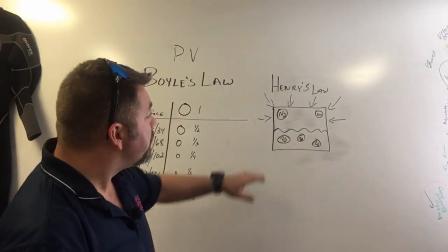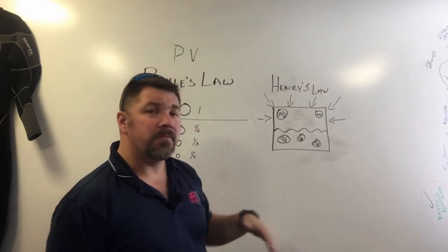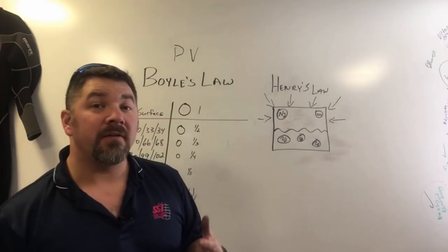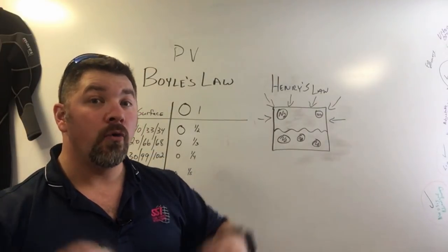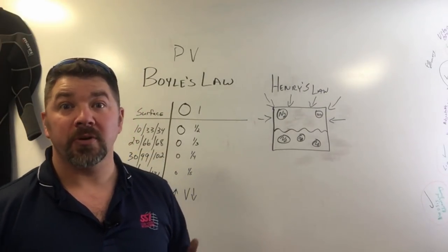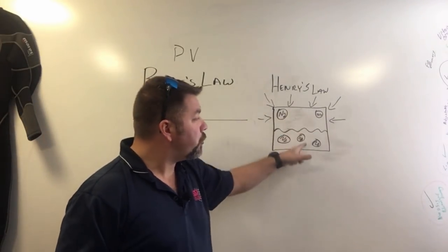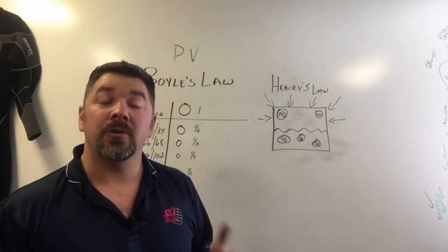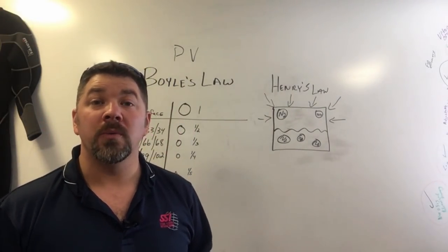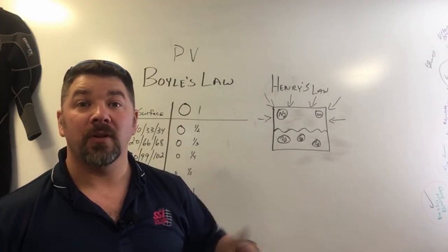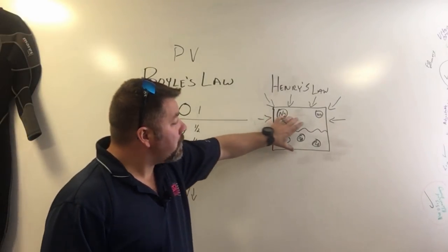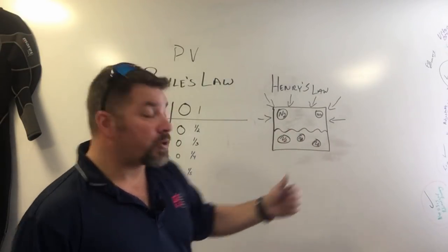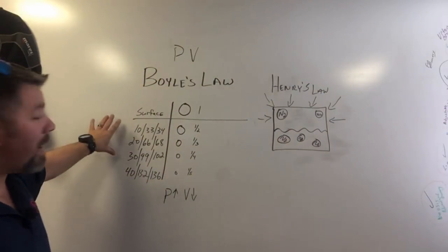As I start to absorb those nitrogen molecules, I want to be cautious not to over-absorb or become what's called supersaturated. If I take on too much nitrogen inside my body's tissues, there will be absolutely no room to diffuse the oxygen flowing through my blood. So I want to make sure I don't supersaturate. Now let's reverse the procedure.